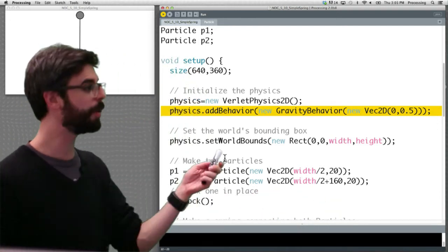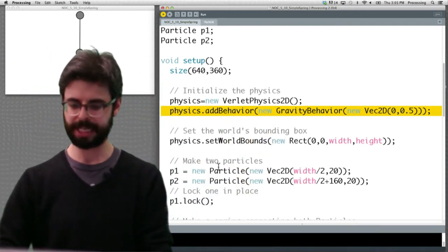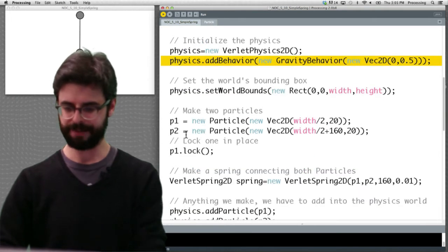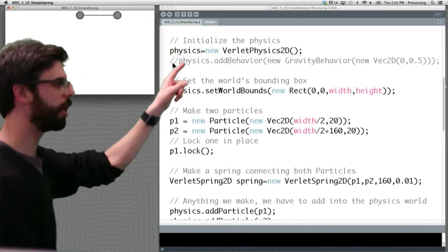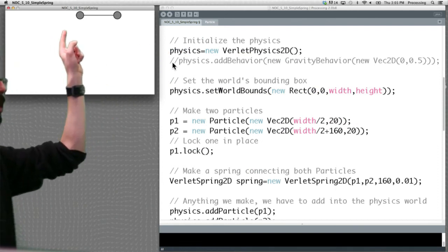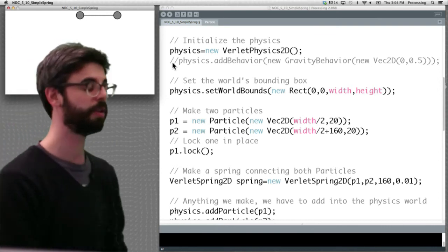We can also set the boundaries of a world which makes objects not able to go beyond those boundaries. You can pick or choose whether you want that. And then, here we are making two particles, one at one location and one at the other. And if I take out the gravity, by the way, and run it, you will see, look, I made two particles. One here and one there. One at width divided by 2 comma 20. One at width divided by 2 plus 160 comma 20. So there we go.